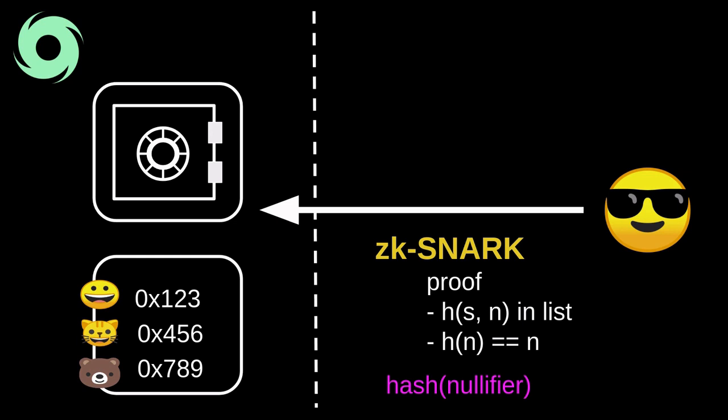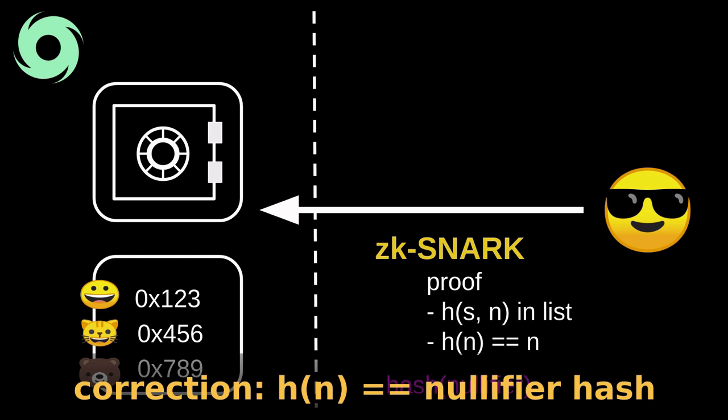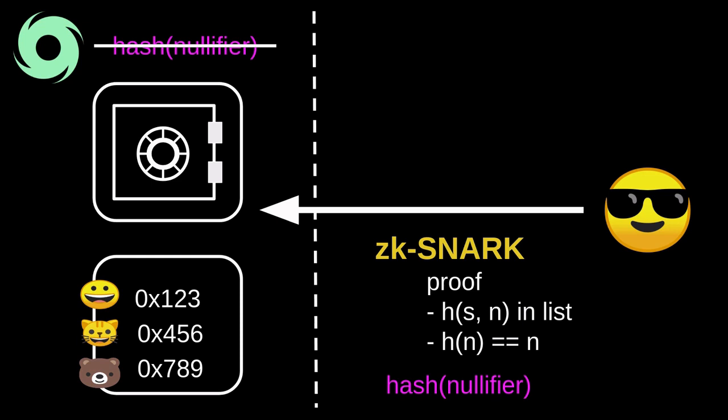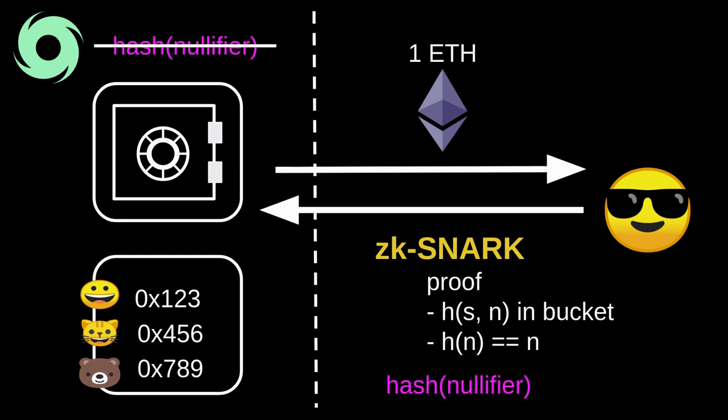To prevent this double spend — meaning you deposited once but can't withdraw multiple times — when you send the proof to withdraw, you'll also have to submit the hash of the nullifier. Inside the ZK-SNARK proof, it would check two things: it would check that the hash of the secret and the nullifier is recorded on Tornado Cash, and it will also check that the hash of the nullifier submitted matches. Once the proof checks out, Tornado Cash records that the hash of the nullifier has been spent. The anonymous user gets the one ETH back. And if the same user tried to withdraw again using the same proof, it will fail because the hash of the nullifier has already been spent and is recorded on the Tornado Cash smart contract. So that is the purpose of the nullifier — to prevent double spending.